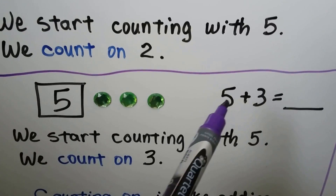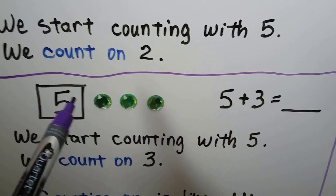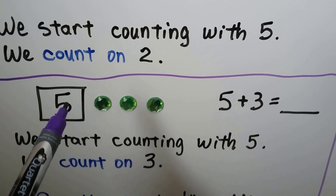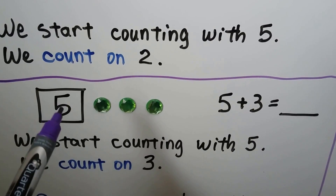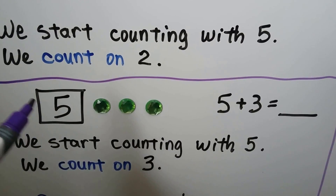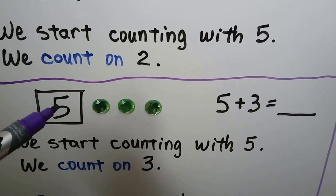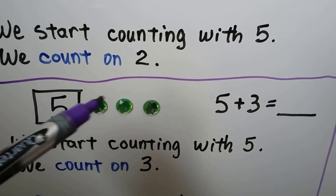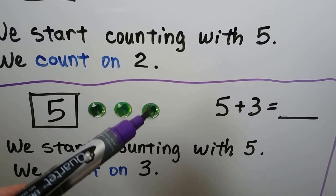For 5 plus 3, we start with the larger addend, 5, and we count on 3: 5, 6, 7, 8.